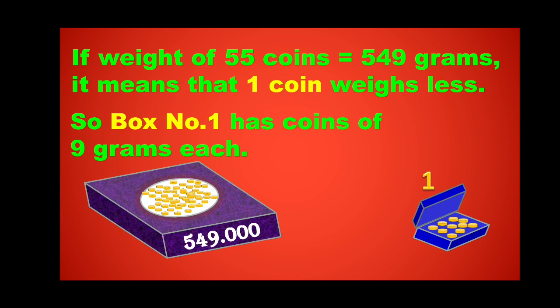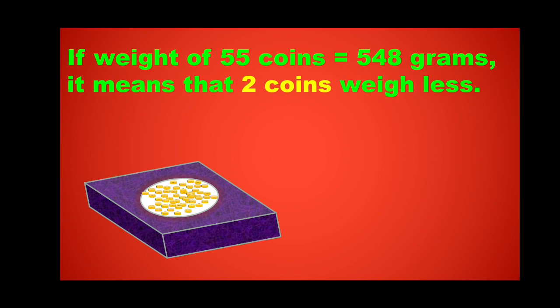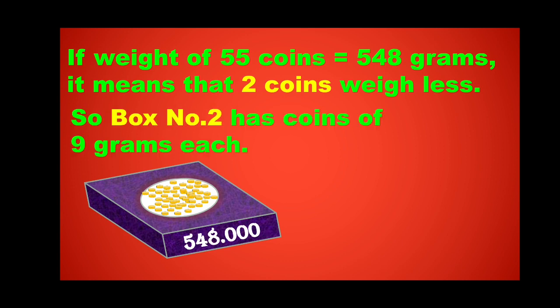If the weight of 55 coins is 548 grams, it means that 2 coins weigh less. Therefore, box number 2 has coins of 9 grams each.